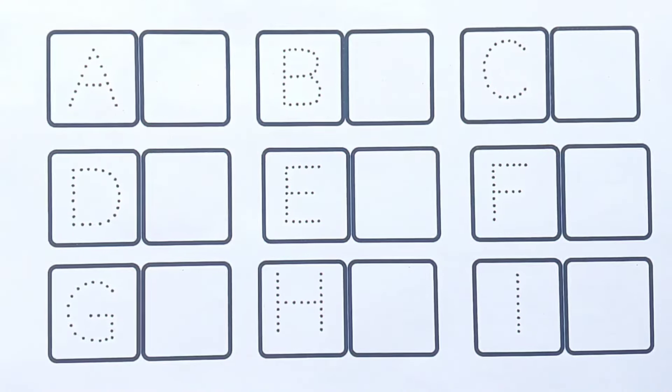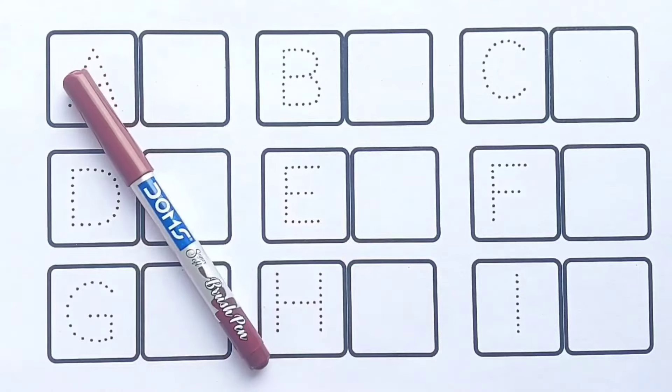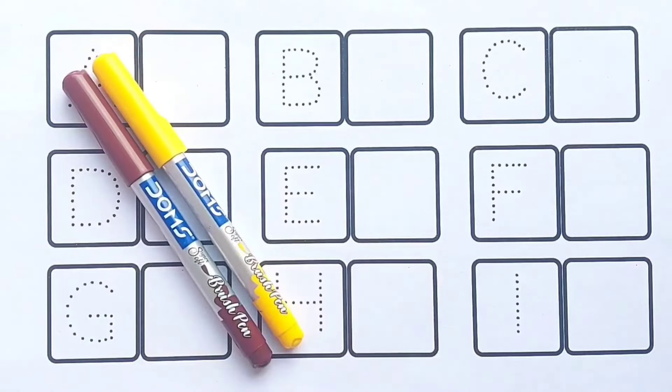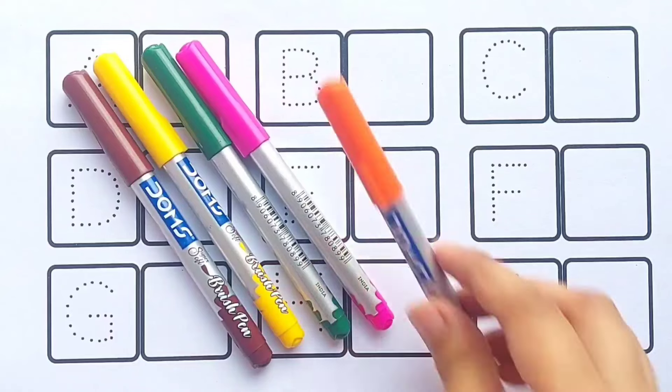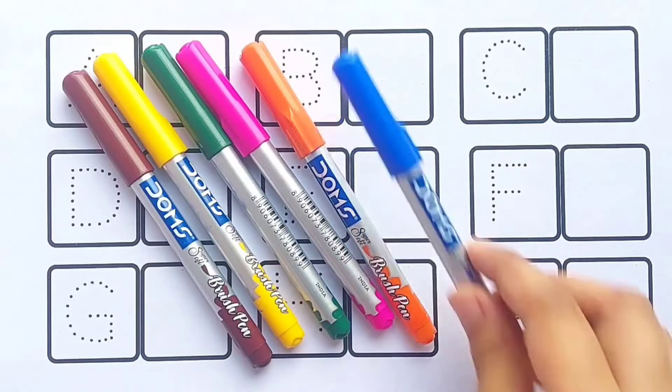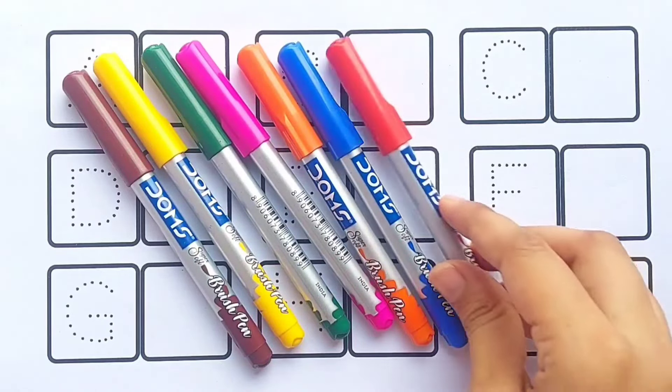Hello kids, let's learn A to Z. Brown color, yellow color, green color, pink color, orange color, blue color, red color, sky blue color, light green color, purple color, black color, red color.